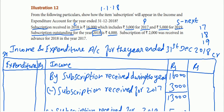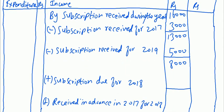If there is Rs.4,000 outstanding, that means the subscription due for the current year 2018 has not yet been received. Since it is outstanding for the current year, we need to add it. So we add Rs.4,000 to the Rs.8,000, giving us Rs.12,000.